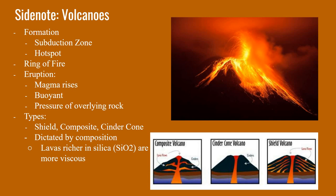Many of the Earth's volcanoes are found along the edges of the Pacific plate, forming the Pacific Ring of Fire, which starts in Chile, goes up through South America, through Mexico, up through Alaska, Japan, and then down to Indonesia and through the Pacific Islands.